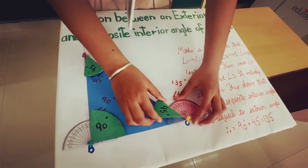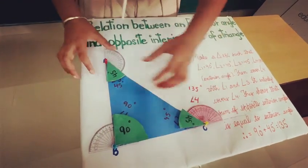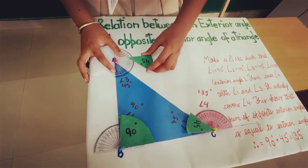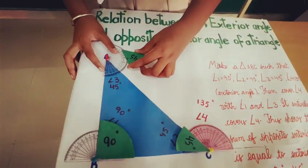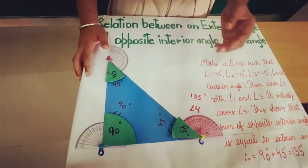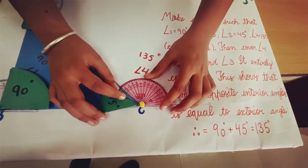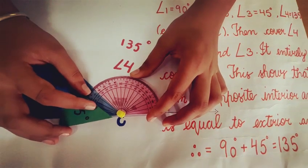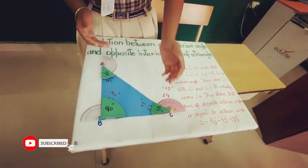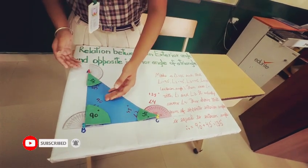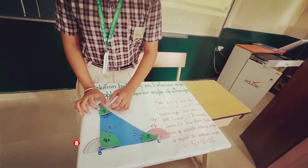Angle 2 is 45 degrees, and our last angle is also 45 degrees. We also have an exterior angle which has a measure of 135 degrees. The angles which are opposite to our exterior angle are angle 1 and angle 3, which are 90 degrees and 45 degrees.